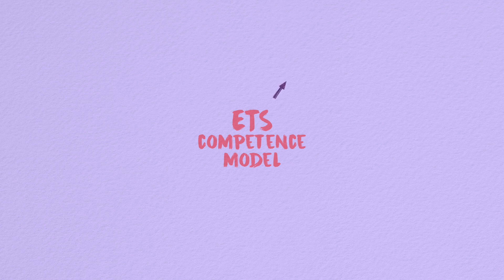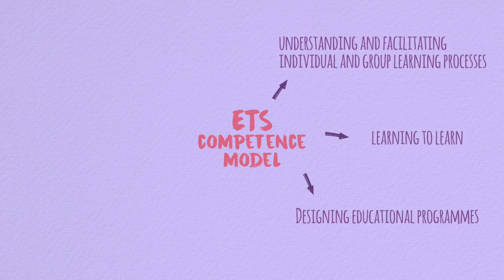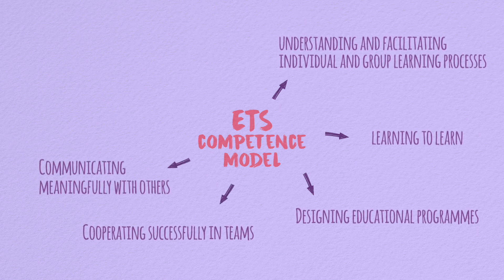The ETS Competence Model for Trainers currently defines seven competence areas: understanding and facilitating individual and group processes; learning to learn; designing educational programs; cooperating successfully in teams; and communicating meaningfully with others.